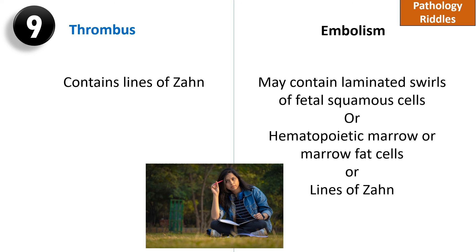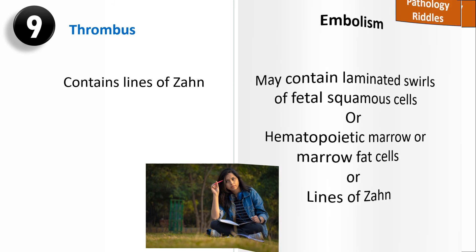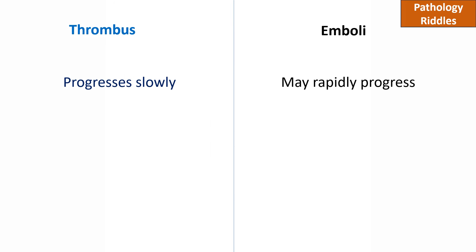A thrombus progresses slowly, while an embolus is very rapid in progress.